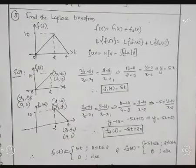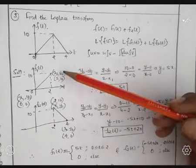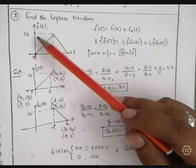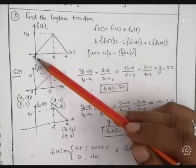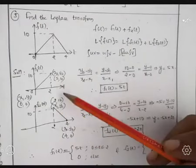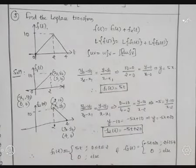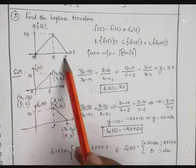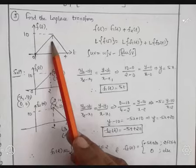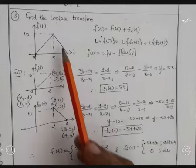Find the Laplace transform of the given function, shown in the figure below. It is a triangular function with amplitude 10 for the duration 0 to 4. From the triangular function, the amplitude is not the same throughout this interval — from 0 to 2 it is increasing, and from 2 to 4 it is decreasing.